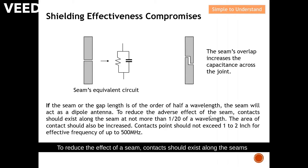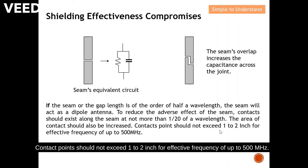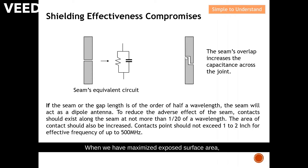To reduce the effect of a seam, contact should exist along the seam at intervals of not more than 1/20 of a wavelength. The area of contact should be increased, and contact points should not exceed 1 to 2 inches for effective frequencies up to 500 MHz. We want to maximize the exposed surface area — when we maximize exposed surface area we increase the capacitive effect, which improves the shielding effectiveness.